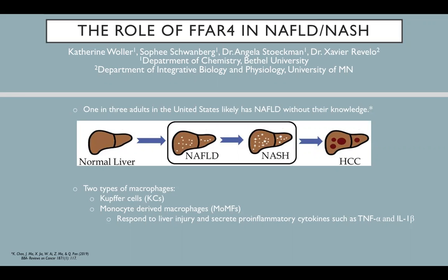Two types of macrophages are linked to the inflammation observed and include Kupffer cells, which reside in the liver, and monocyte-derived macrophages. During liver injury, such as accumulation of triglycerides, monocyte-derived macrophages are recruited to the liver and secrete pro-inflammatory cytokines such as TNF-alpha and IL-1-beta.